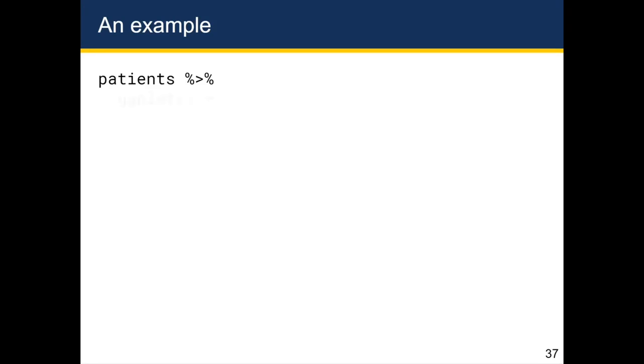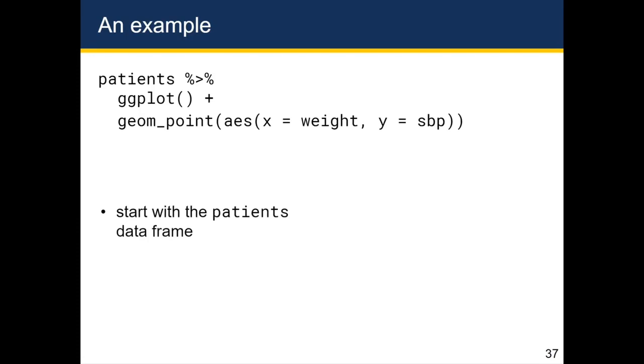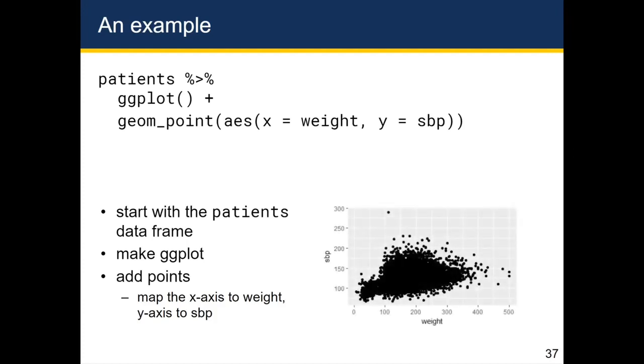It might help to see this in the form of a few examples. So let's say I start with the patients data frame. I add a ggplot. And then I add a geom_point, which is a type of geometric object that generates points. And inside of that geom_point object, I add this aes function, which stands for aesthetic. The aes function basically means that anything inside of it specifies a mapping from aesthetics to variables. So I'm mapping the weight to the x-axis and the systolic blood pressure to the y-axis. So if I use this to generate a ggplot, the way I'm going to read this is start with the patients data frame, then make a ggplot, then add points, and map the x-axis to weight and the y-axis to SBP. And if I do that, I'll get the following scatter plot.